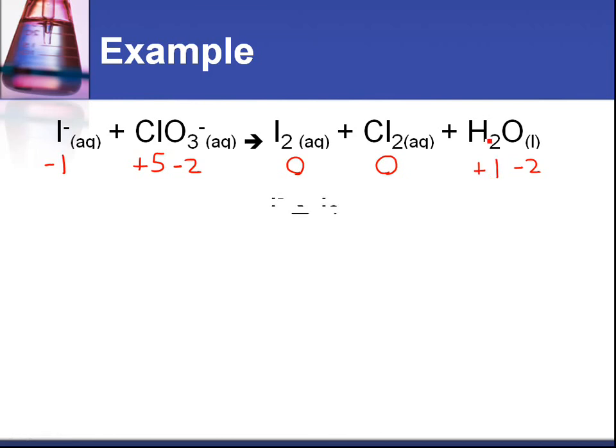The next thing we have to do is balance the atoms other than H or O. In this one here you've got two I's on the right hand side and one on the left, so we need to add a two there. In the second half equation, on the right hand side we've got two chlorines, on the left we've got one, so another two there.